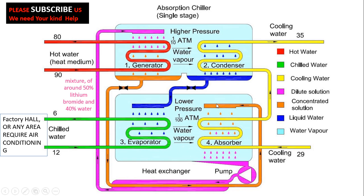The output of the absorption chiller is cooling and air conditioning of a factory hall or any area requiring conditioning. We get a cold water line from the absorption chiller — for example, water enters the production hall at 6°C and returns to the chiller at 12°C.